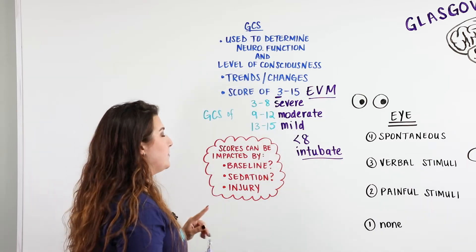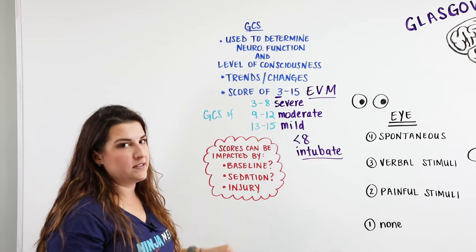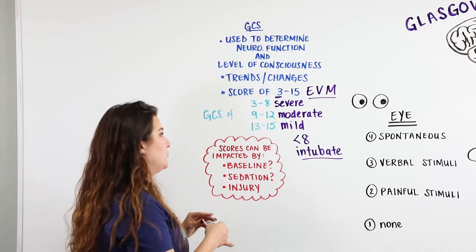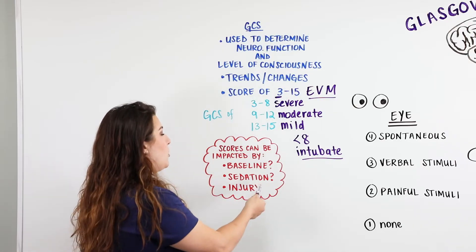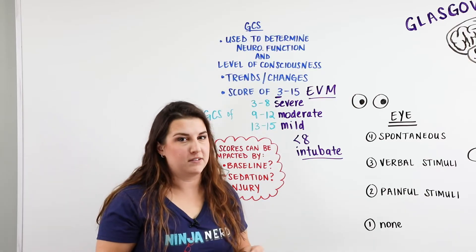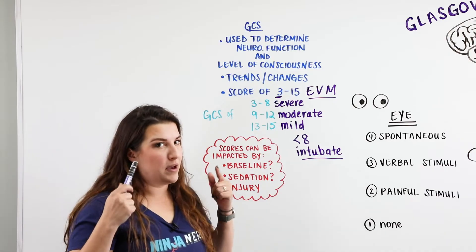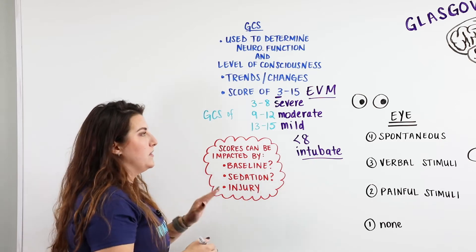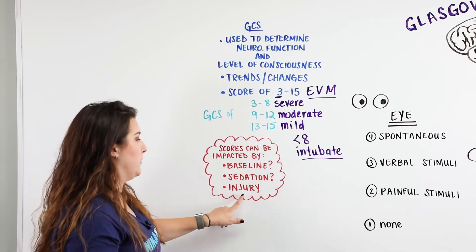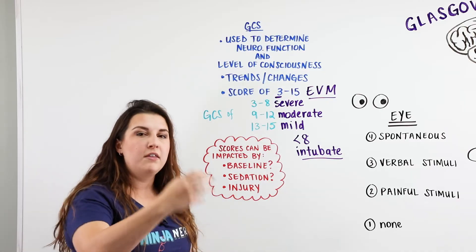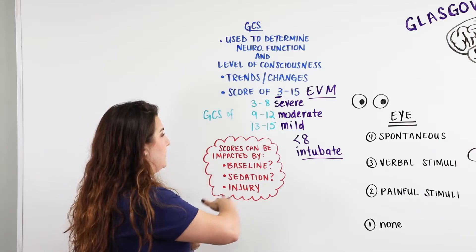A patient's GCS score can be impacted by several factors. First, consider their baseline — some patients may only ever reach a moderate score of 9 to 12 due to underlying conditions. Second, check if they're on sedation or pain medication, which will lower their score. Third, consider injury — if a patient has a severe facial injury with eyes swollen shut, you won't be able to assess the eye component properly.